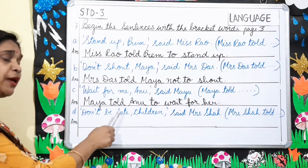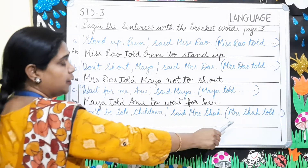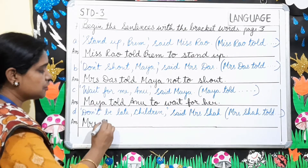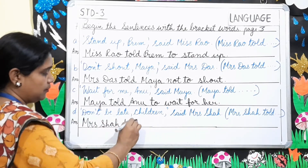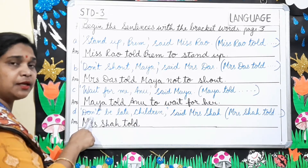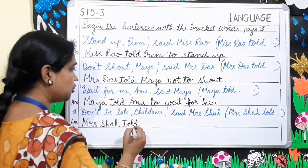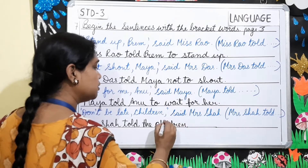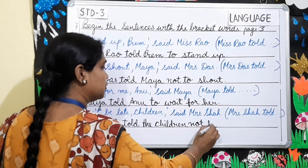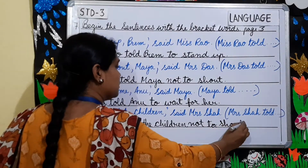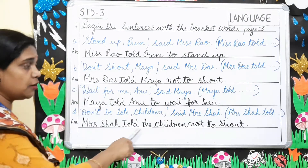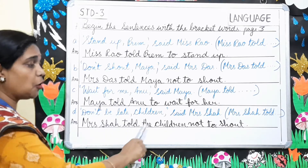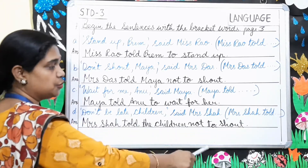Number D: 'Don't be late, children,' said Mrs. Shah. In the bracket: 'Mrs. Shah told.' Begin your sentence with 'Mrs. Shah told.' And 'don't,' as I said earlier, will change to 'not to.' Before you write 'children' you have to use 'the.' So: Mrs. Shah told the children not to be late.